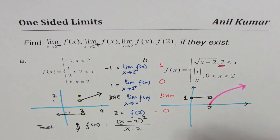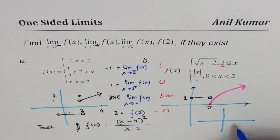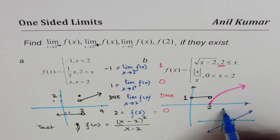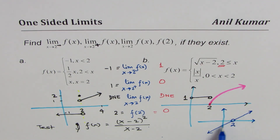Here is a quick solution. Notice that (x - 2)² / (x - 2) simplifies to (x - 2), so the graph looks like y = x - 2 but with a hole at x = 2, since the function is discontinuous there. The value f(2) does not exist. However, both the left-hand and right-hand limits approach 0, so the two-sided limit at x = 2 exists and equals 0.